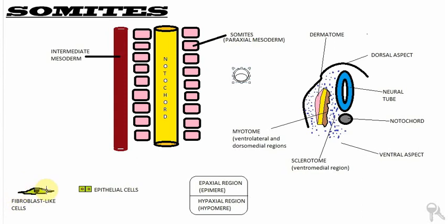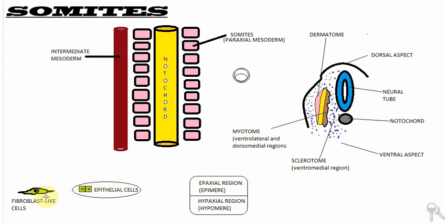Some of these cells will undergo a process known as epithelialization and will form epithelial cells, as you can see here. But these epithelial cells won't remain as such — some will reconvert back to fibroblast-like or mesodermal cells. You can say that the fibroblast cells go through a process of epithelialization and are then reverted back to fibroblast cells, and this occurs in different regions of the somitomere.